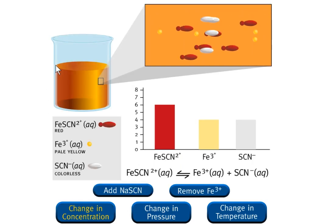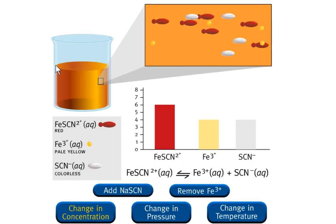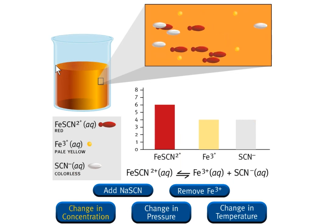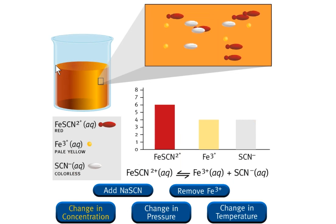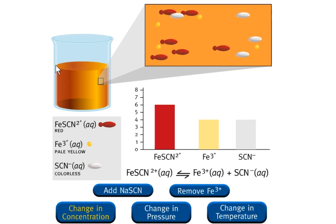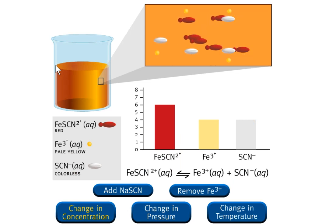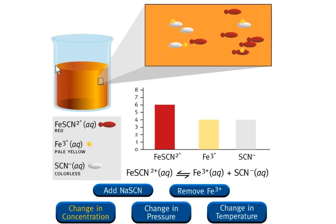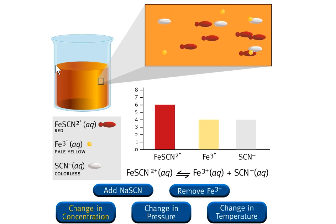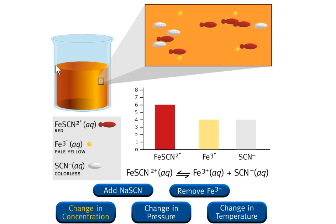Iron 3-thiocyanate, which is FeSCN3, dissolves readily in water to give a red solution. The red color is due to the presence of hydrated iron thiocyanate ions, FeSCN2+.